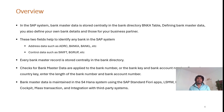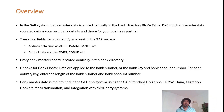Bank master data is stored in a table called BNK, also known as the bank directory. There are two sets of fields in the bank master data: one is the address fields and another is the control data fields. The bank master can be maintained in the S4 system using SAP standard Fiori apps, LSMW, migration cockpit, mass transaction, or integration with a third-party system.